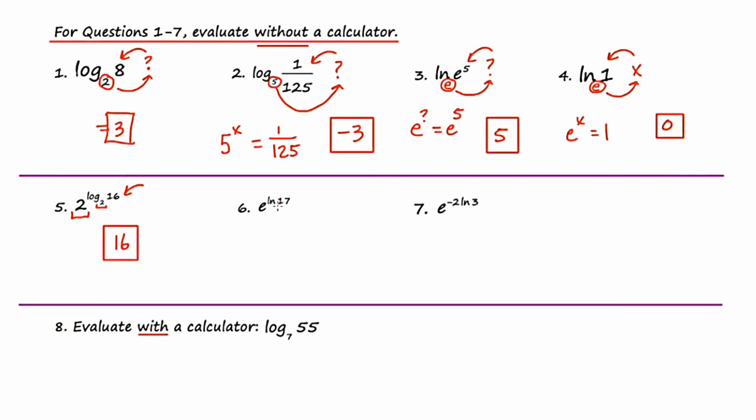In number six, there is an implied base of e here. So this is e to the ln of seventeen base e. The important thing to remember is that this value e is the same as this base. So the answer is just going to be this number, which is seventeen.